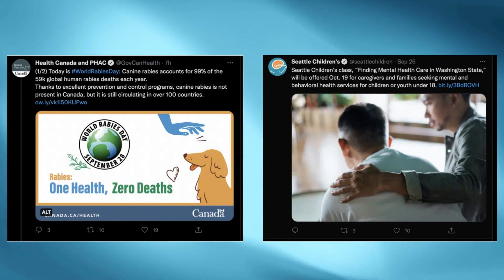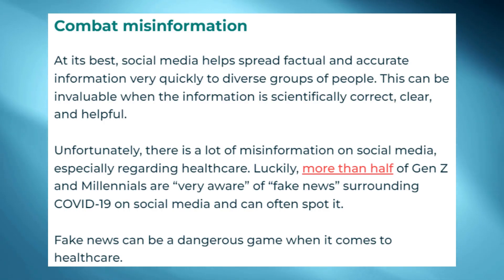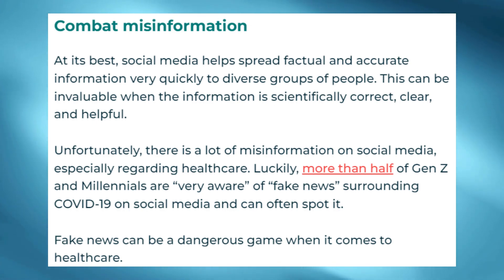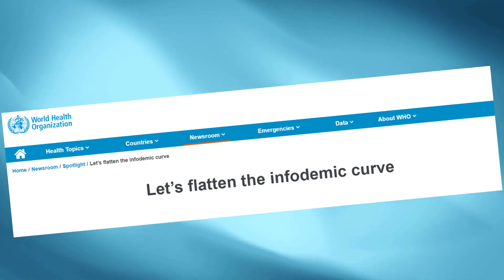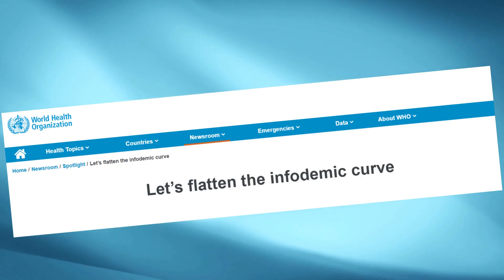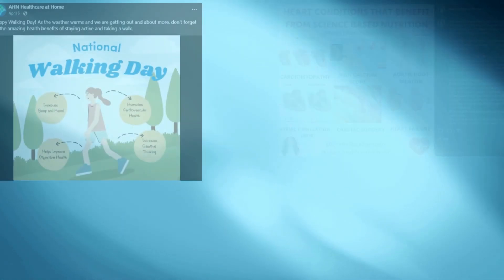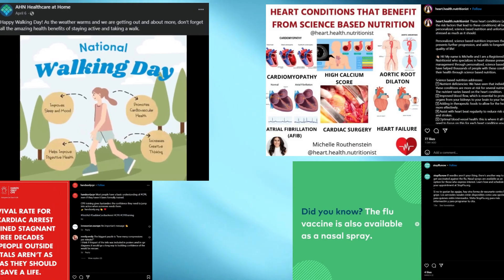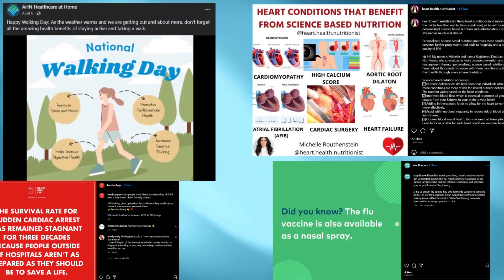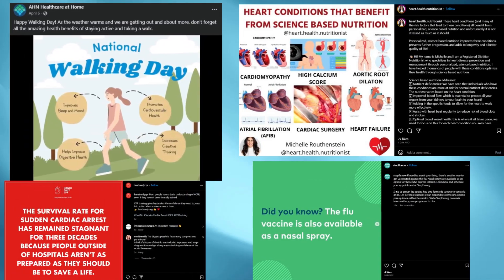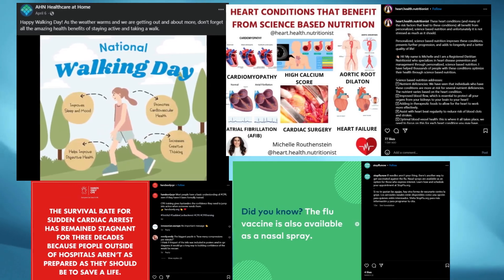Always provide a link for the audience so they can access more detailed information if they want to. The next benefit is being able to combat misinformation. You can counter inappropriate healthcare claims by raising awareness and providing the public with links to credible sources. The World Health Organization gives seven steps you can take to identify if a post is misinformation, which involves checking the source, examining supporting evidence, and turning to fact-checkers. You can share helpful resources and educational posts to establish your brand as a topic authority, as discussed earlier.